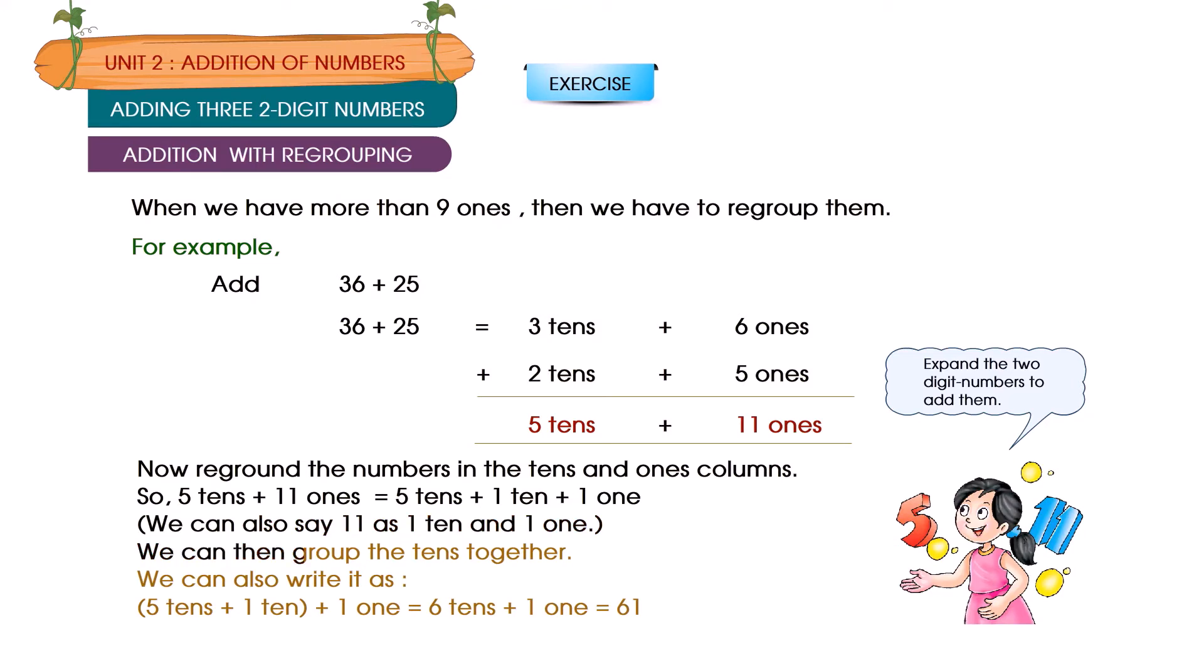We can then group the tens together. We can also write it as 5 tens plus 1 ten plus 1 one is equal to 6 tens plus 1 one, which equals 61.